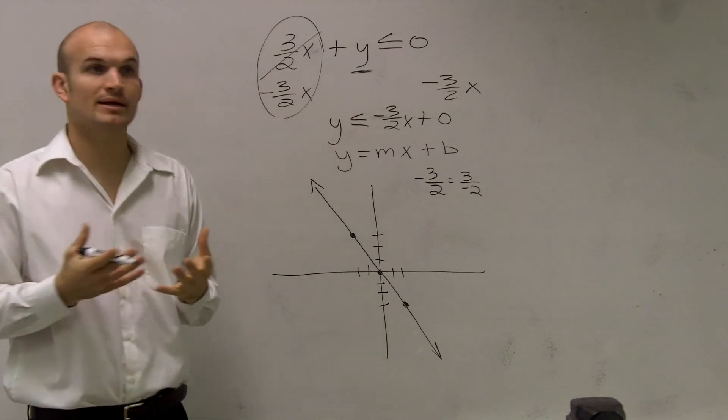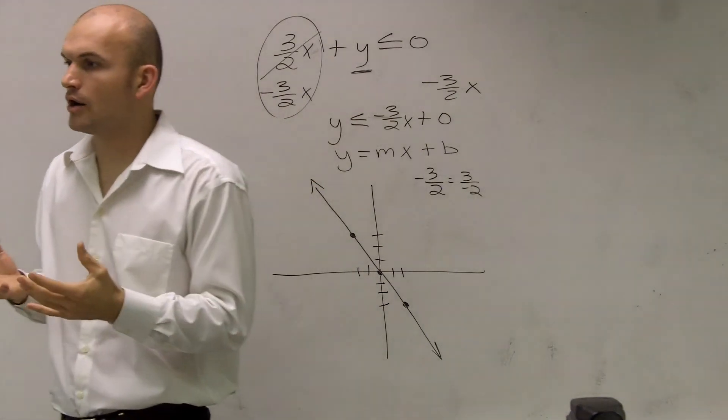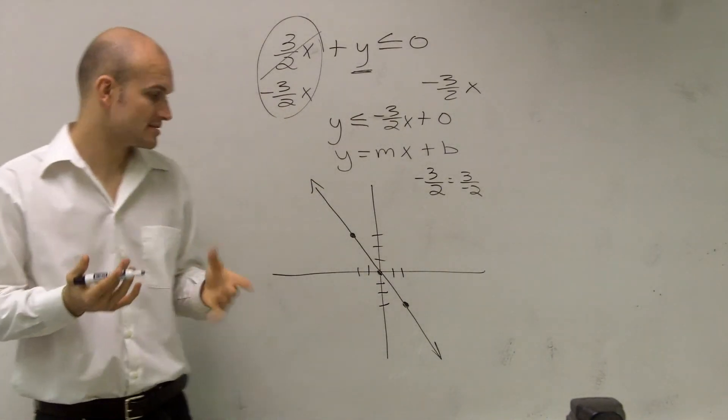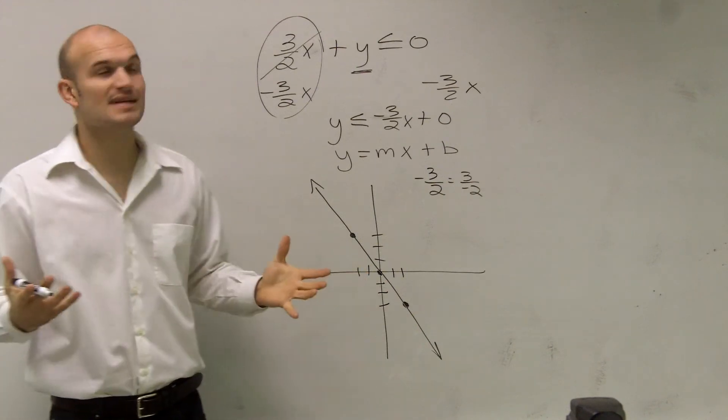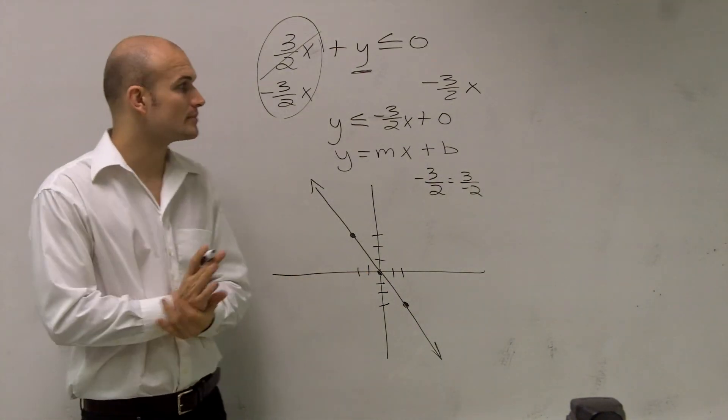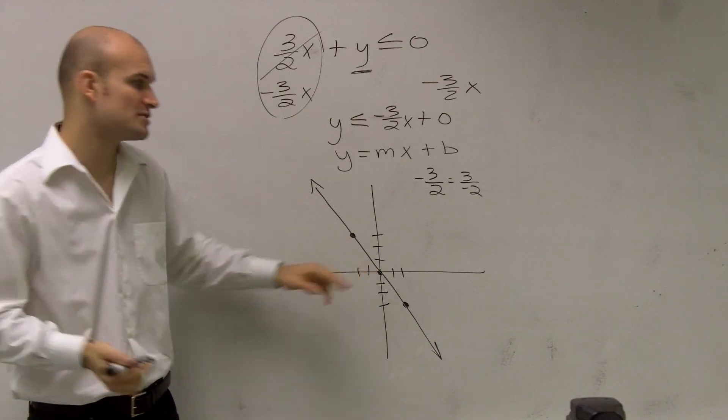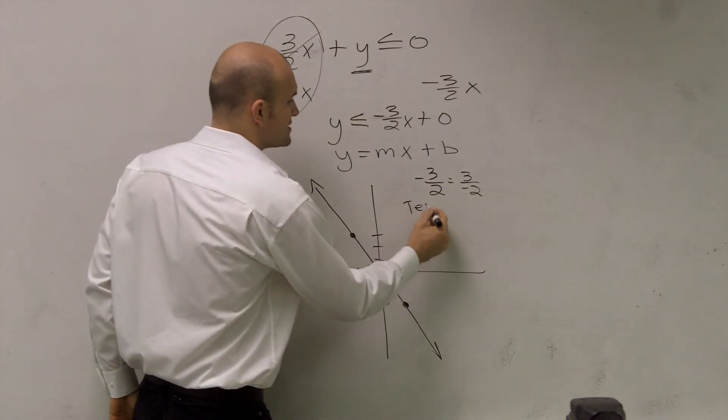Now, lastly, we need to determine what our test point is. I told you guys that always the easiest test point to pick was 0, 0. And here's why 0, 0 will not work for this problem. So if I did test 0, 0...